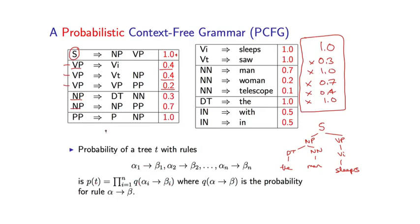So I write Q. So for example, Q of VP goes to VT NP is equal to 0.4 in this grammar. So each rule has a parameter Q of that rule, which is some probability. The probability for an entire tree is the product of these Q terms, just as I illustrated here.